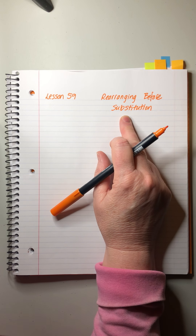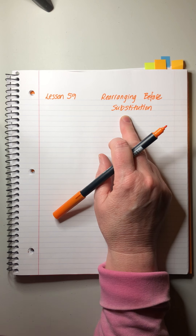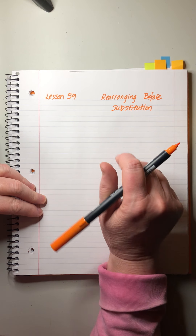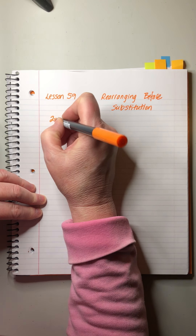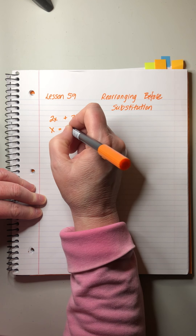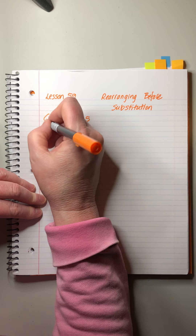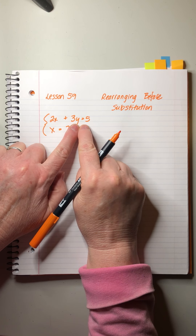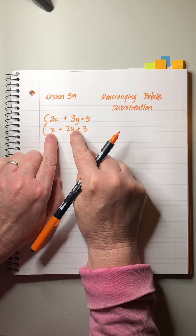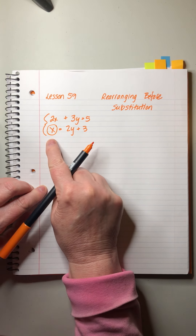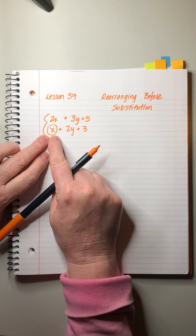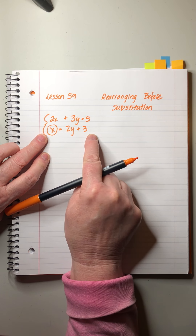The process we're working with is our old friend substitution, which we've been doing for a while now. Remember, it's how we solve a system of equations by plugging one equation into the other. We've always done it with a pair of equations where one equation has x plus y equals some number, and the other equation has one variable by itself on one side, with everything else shoved to the other side.